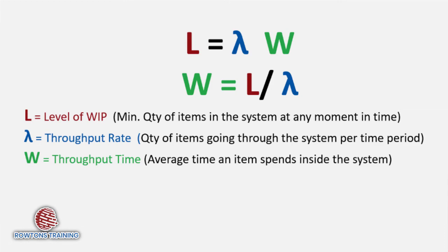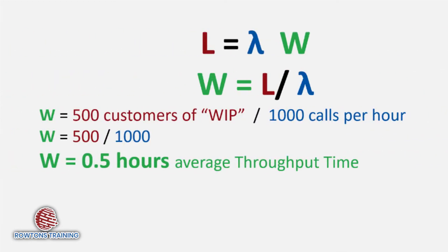L is our level of work in progress, or in our case the 500 customers we have on average in our system at any moment in time. And lambda is the throughput rate, the rate we're able to process them, which we said is 1000 per hour. W equals L over lambda. W equals 500 over 1000. W equals half an hour.